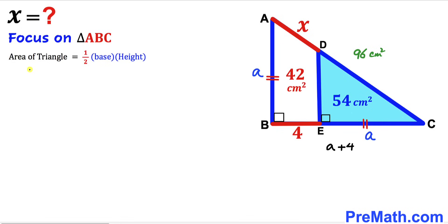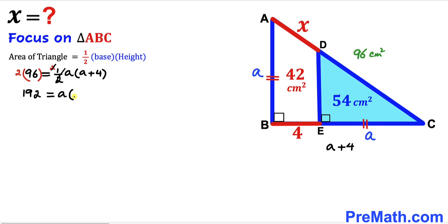Filling in the formula: 96 equals one-half times a times (a plus 4). Multiplying both sides by 2, the fraction cancels and we get 192 equals a times (a plus 4). Distributing gives us 192 equals a squared plus 4a. Moving 192 to the other side, the equation becomes a squared plus 4a minus 192 equals 0.